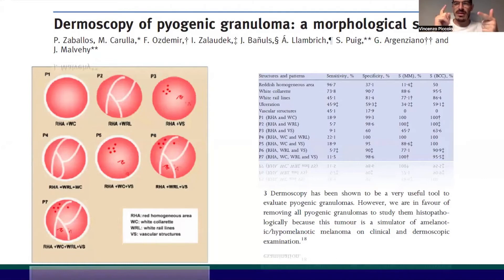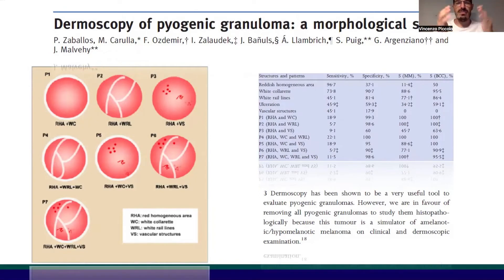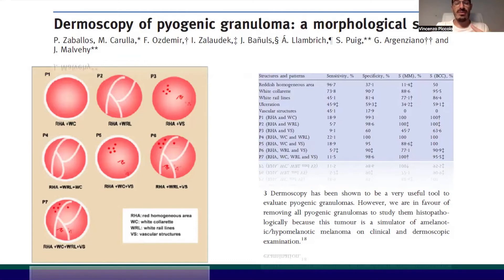the white-colored red lacunae and the wide red lines are most associated with pyogenic granuloma and in general with benign tumors, whereas vessels in pyogenic granuloma are not so typical of this kind of tumor, but they can be confounding dermoscopic features.